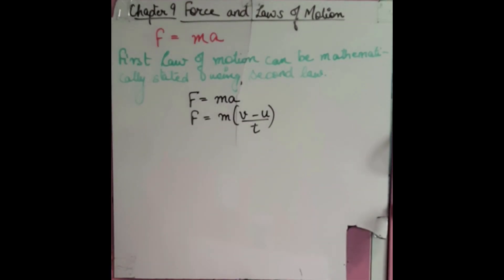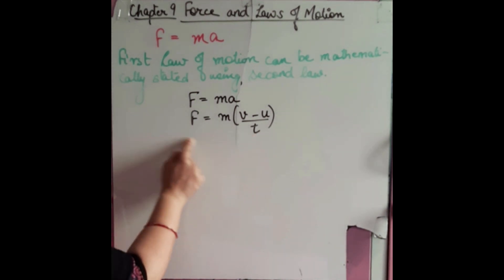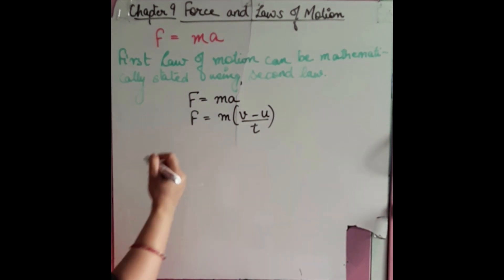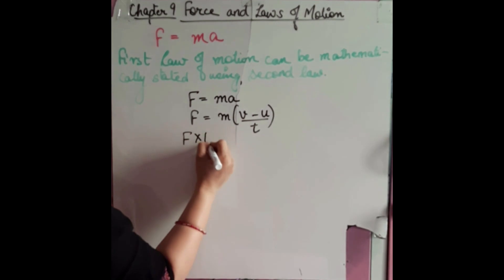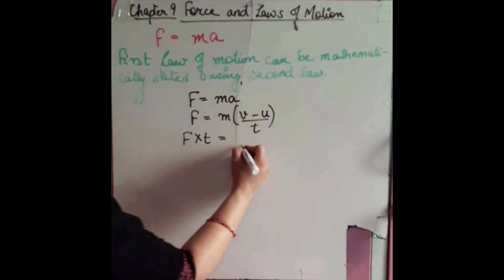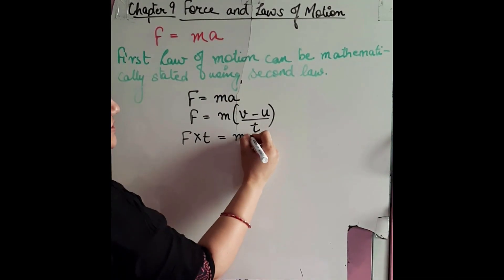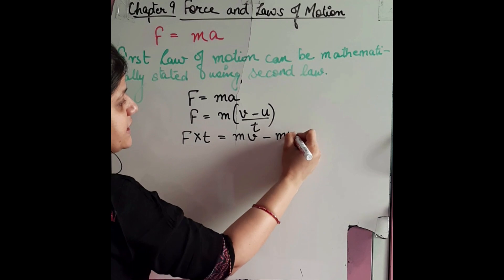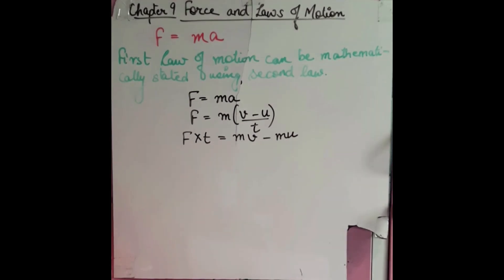Acceleration is the rate of change of velocity, so A equals V minus U upon T. Taking T to the left-hand side and opening the bracket, we get F into T is equal to MV minus MU.